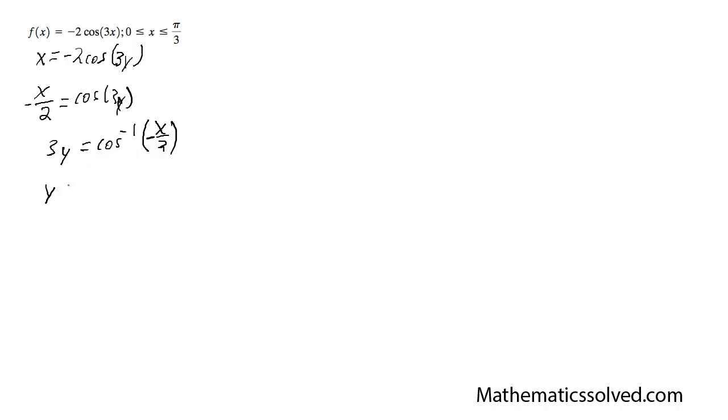And I'm going to divide through by 3, so y equals cosine inverse of negative x over 2, all divided by 3.